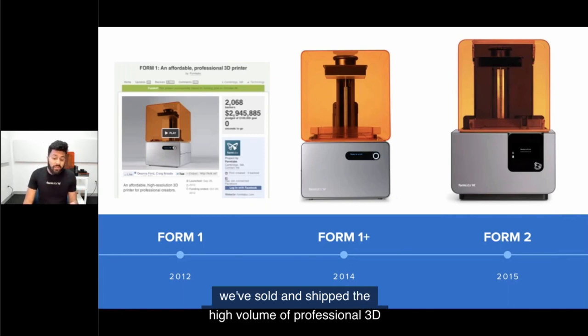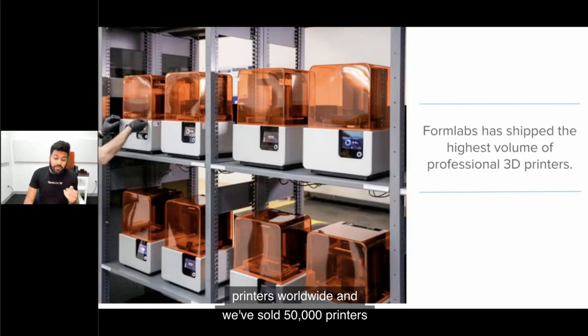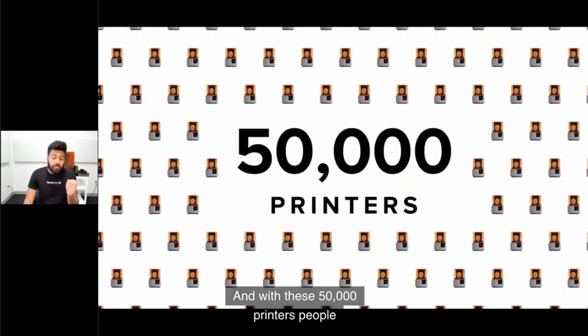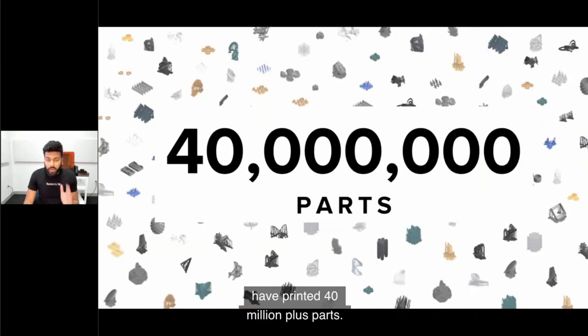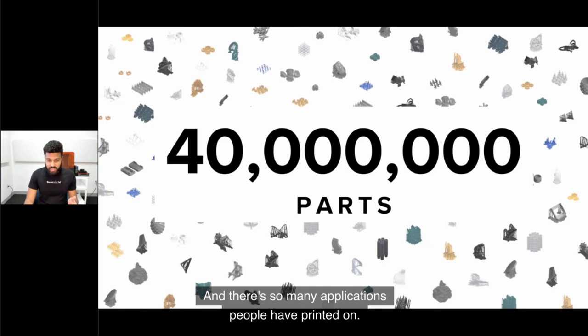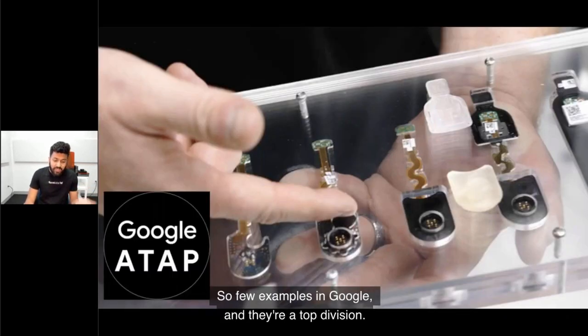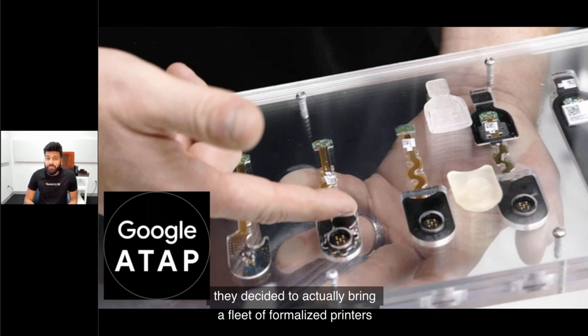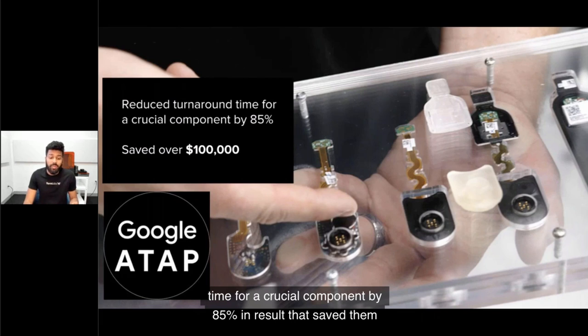We've sold 50,000 printers around the world, and people have printed 40 million-plus parts. In Google's ATAP division, they were creating this wearable device. They brought a fleet of Formlabs printers in-house, reduced turnaround time for a crucial component by 85%, and saved them over $100,000.